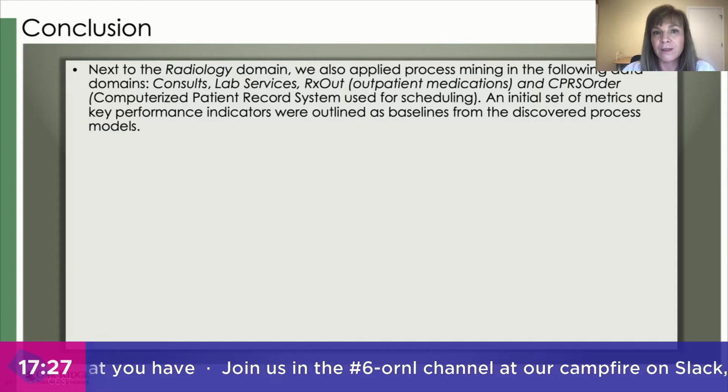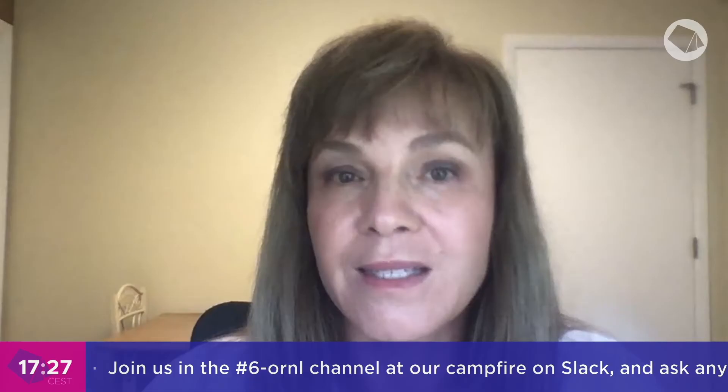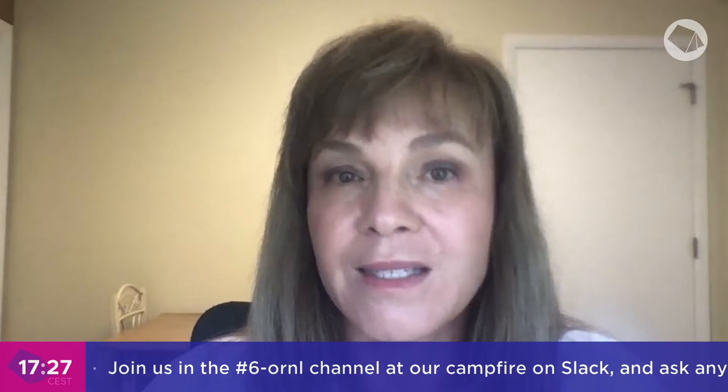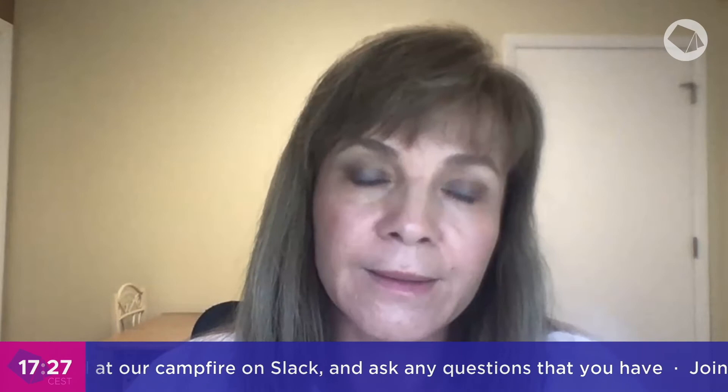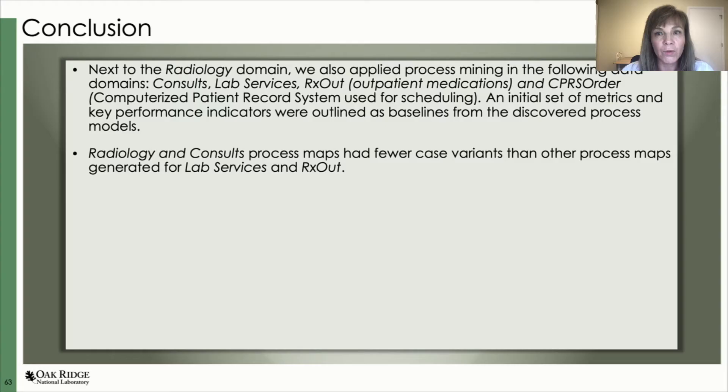And also the Computerized Patient Record System, CPRS order, which is like a scheduling system. We developed an initial set of metrics and key performance indicators outlined as a baseline from the discovery process models. We noticed that radiology and consults process maps have fewer case variants than other process logs such as lab service or outpatient medications. When I'm talking about fewer cases, we're talking in the hundreds of thousands. It's interesting to observe that radiology and consults seem to have 80% of variants with more than two cases — up to thousands — while 20% are completely distinct.